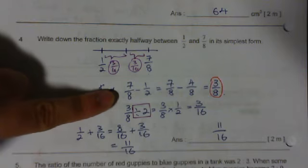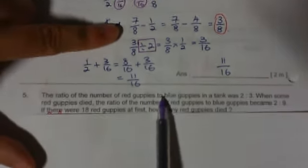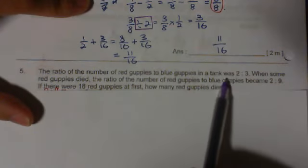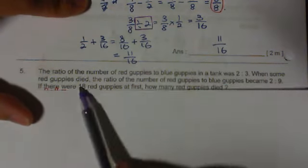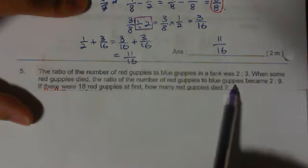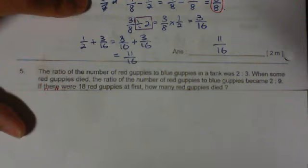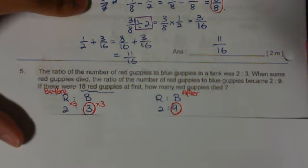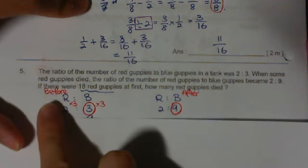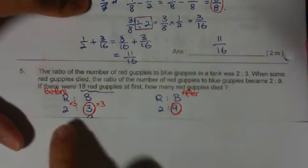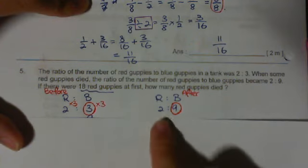Next question. The ratio of the number of red guppies to blue guppies in the tank was 2 is to 3. When some red guppies died, the ratio of red guppies to blue guppies became 2 is to 9. If there were 18 red guppies at first, how many red guppies died? Quite a simple question. First, I write down my ratio. Before and after. Before is 2 is to 3 and after is 2 is to 9.